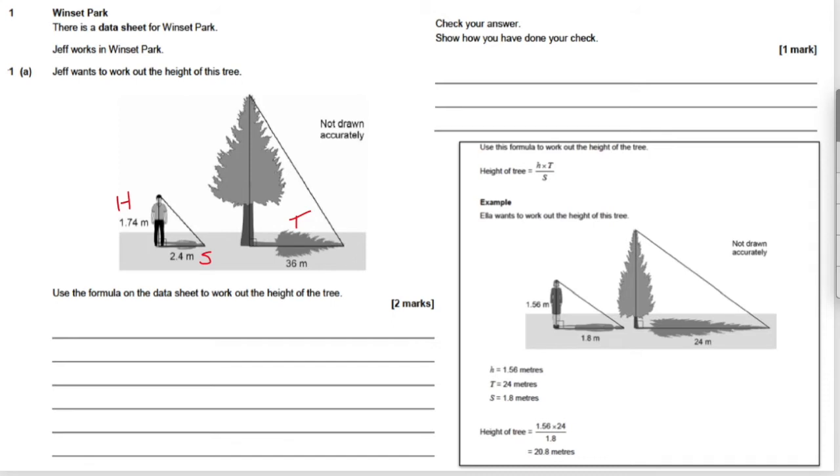So you'd have height which is Jeff's height which is 1.74 multiplied by the T which is the shadow of the tree which is 36. And then we divide the whole thing. I'm just going to put H here. T here. Which is multiplied by the shadow created by Jeff which is 2.4.